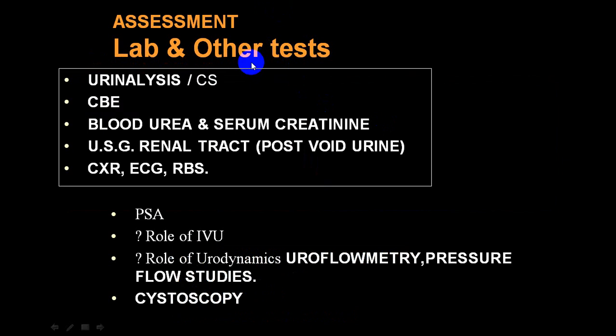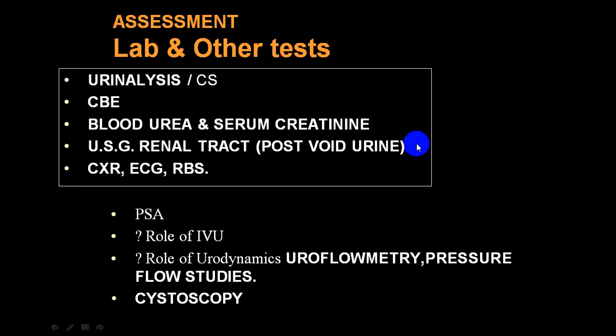After drainage, urine is sent for microscopic and routine examination, and for culture and antibiotic sensitivity. Simultaneously, check CBC to assess for infection. Blood urea and serum creatinine are done to evaluate renal function — these rise rapidly in acute retention and gradually in chronic retention. Ultrasound is commonly done post-voiding to find residual urine capacity, which is high in chronic retention and neurogenic bladder. Chest X-ray, ECG, and random blood sugar are done to rule out other etiologies.